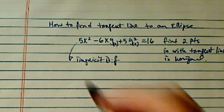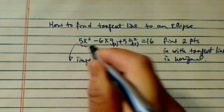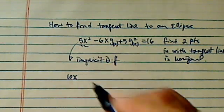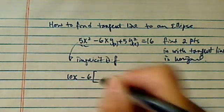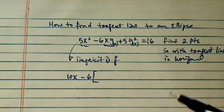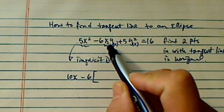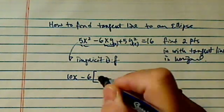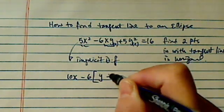Thus you have to use chain rule. So the first term taking derivative, I have a 10x, that's the easy one, minus 6. Then I'm going to take a derivative of x times y. I'm going to use product rule. Derivative of the first term, which is 1, 1 times y, which is y.